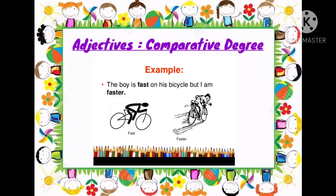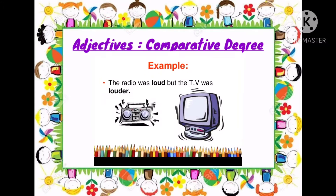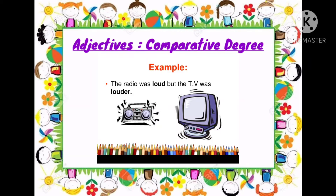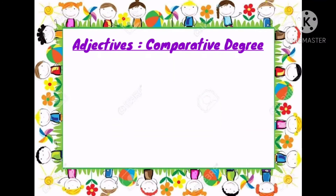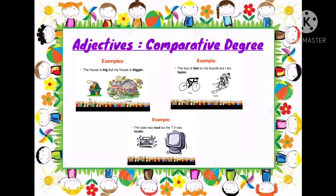Another example of comparative degree: 'the radio was loud but the TV was louder' — here comparison is being made between two things, that is radio and TV. So students, when we compare only two persons or things with regard to a particular quality, it is said to be in comparative degree of an adjective.